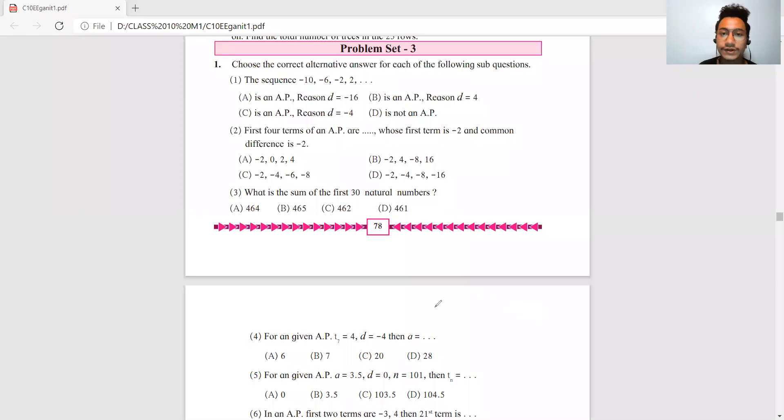Hello everyone, welcome back to my channel. In this lecture we are discussing problem set 3, questions 3.1 to 3.4. These are MCQ-based questions and very important. Problem number one: the sequence is -10, -6, -2, 2, and you have to find out the answer according to option d.